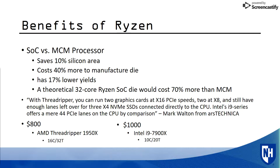Mark Walton from Ars Technica praises Threadripper for having so many PCIe lanes at speed, while Intel's i9 series has fewer PCIe lanes and fewer cores by comparison. As seen at the bottom of this page, the AMD Threadripper 1950X costs about $800, and the Intel i9-7900X costs about $1,000. Threadripper has 16 cores and 32 threads, while Intel, which is $200 more expensive, has only 10 cores and 20 threads.